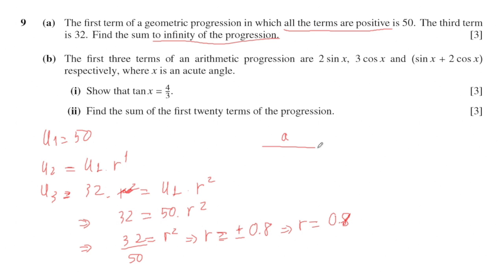The sum to infinity of the progression will be equal to a divided by 1 minus r. So you got a is 50 and you got r is 0.8. So you can calculate and have the answer, which is 250. This question is quite easy.